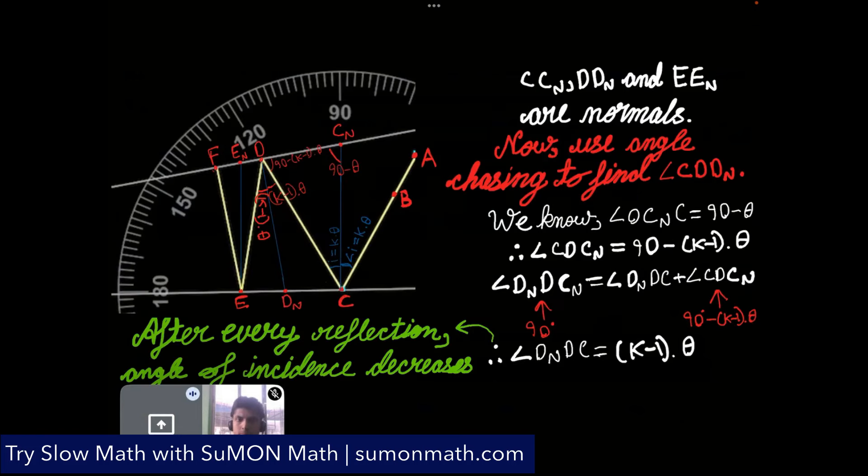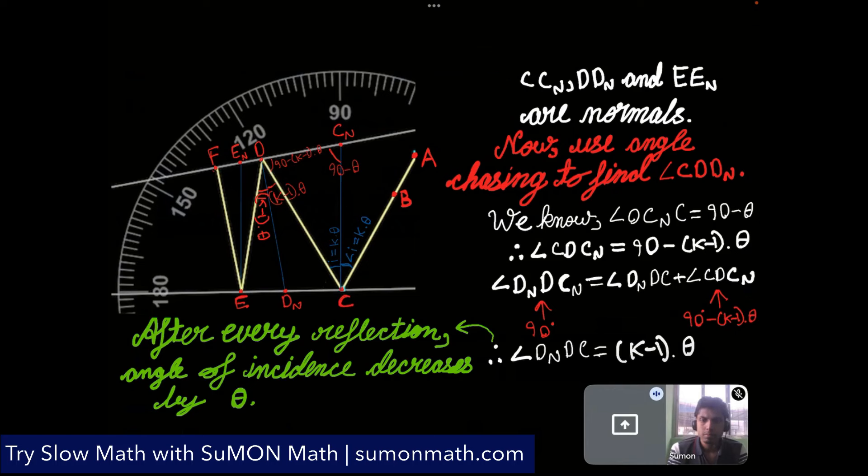So first, using angle chasing, we have to find the next angle of incidence. So first we draw the normals from c, d and e and we label them. So using angle chasing, we find cdn and when we find cdn we observe that it is equal to k minus 1 theta. Whereas the first angle of incidence was k into theta. This means that the angle of incidence has been decreased by theta which means after every reflection, the angle of incidence will decrease by theta.